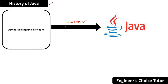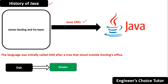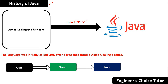The language was initially called Oak, after an oak tree that stood outside Gosling's office. Later the project went by the name Green, and was finally renamed to Java. They were not able to register the name Oak because some other product was already registered with the same name.